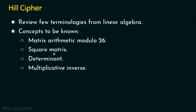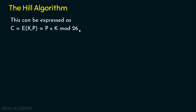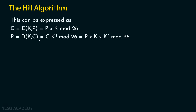The key is a square matrix — 2×2 or 3×3. For decryption, we also need to know the determinant, multiplicative inverse, and matrix arithmetic. But in this presentation, we are going to do encryption only. The Hill algorithm deals with two portions: one is the encryption process and the other is the decryption process.